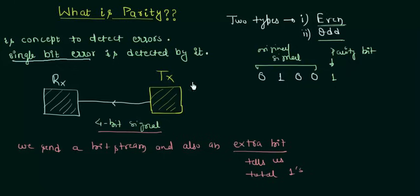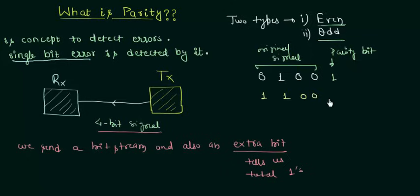Let's take another example of even parity. If the original signal is 1 1 0 0, you can see there are two 1s, which means an even number of 1s. Whenever there is already an even number of 1s in even parity, we just make the parity bit 0, because at the end of the day we want the total number of 1s to be even in the case of even parity.